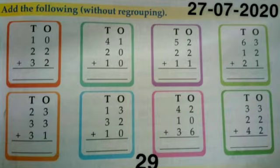So first we will add the numbers in ones column. Here 0 plus 2 plus 2 is equal to 4 and the numbers in tens column are 1 plus 2 plus 3 is equal to 6. So the sum of these numbers is 64.